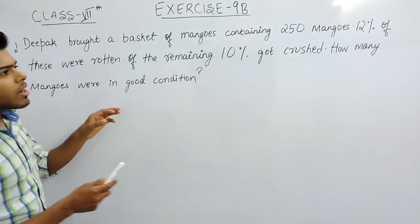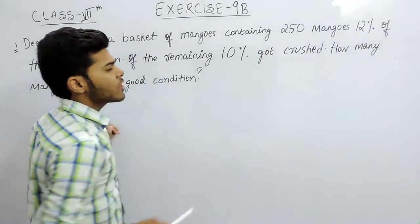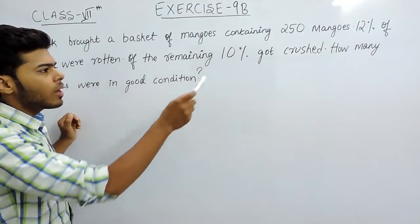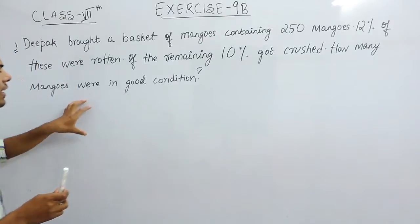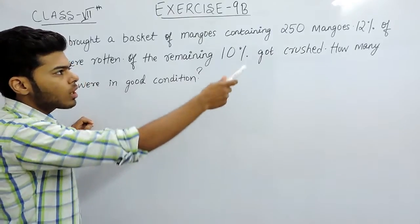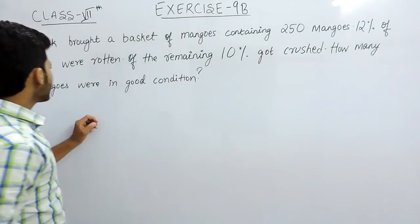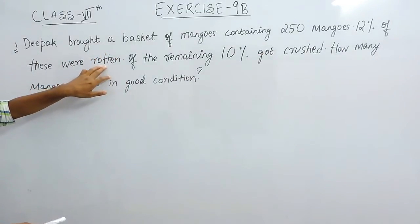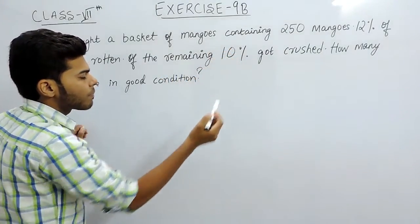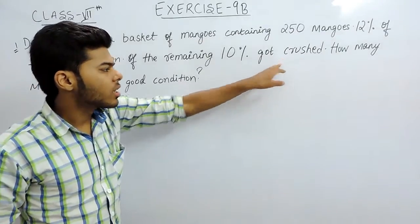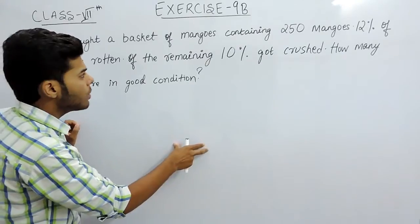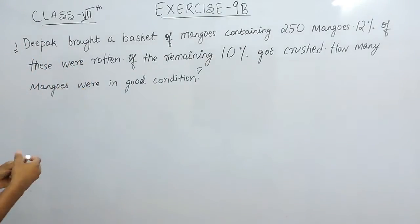What we will do is: the total number of mangoes are 250. First we will find the number of mangoes that got rotten — that will be 12% of 250. After that, the question says 'of the remaining,' meaning from the total of 250 we subtract the mangoes that got rotten, which gives us the remaining mangoes. Then we will find 10% of them that got crushed, and subtract that from the remaining.